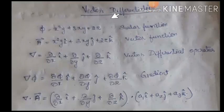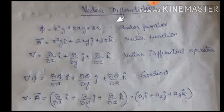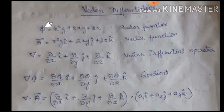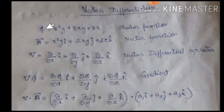In module one we are studying vector differentiation. Important terminologies we come across in vector differentiation will be explained here. The first terminology is scalar function. A scalar function is always denoted with notation phi, for example x squared y plus 3x — some function in terms of x, y, and z variables.